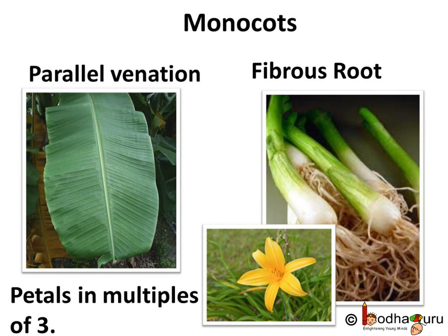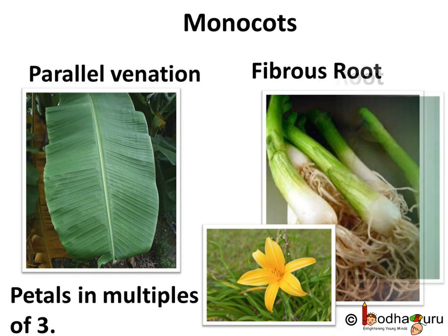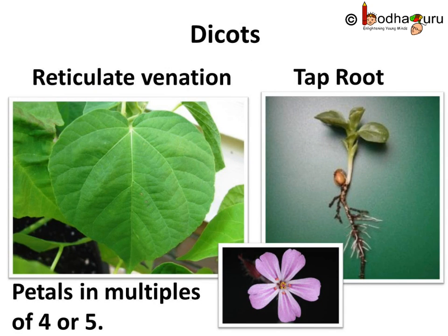How do we know whether a flowering plant is a monocot or a dicot? If the venation in the leaves is parallel — that is, the leaf veins are parallel — and the roots are fibrous, then the plant is a monocot. In monocots, the flowers have petals in multiples of three. Whereas if the leaf venation is reticulate — that is, the leaf veins are branched — and the roots are taproot, we say the plant is a dicot. In dicots, the flowers have petals in multiples of four or five.